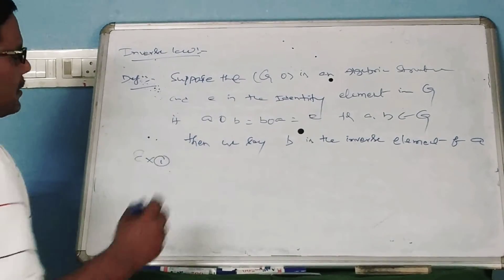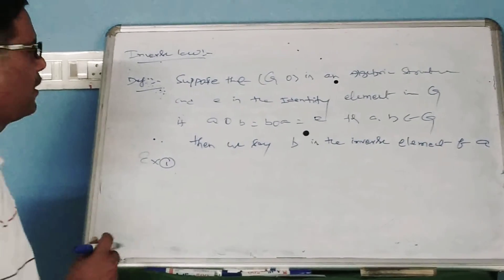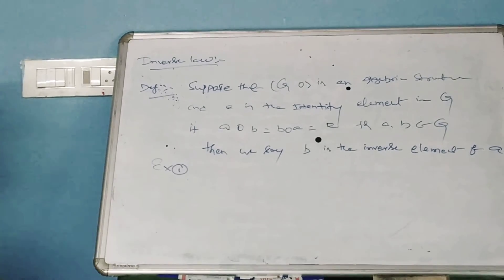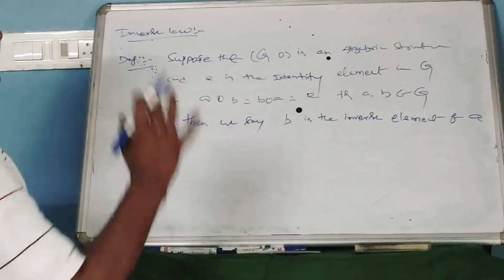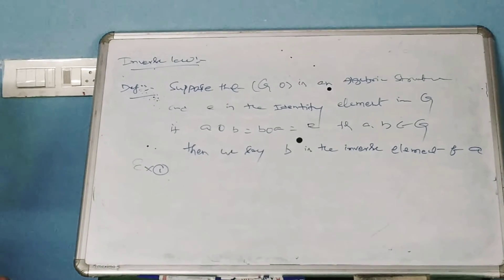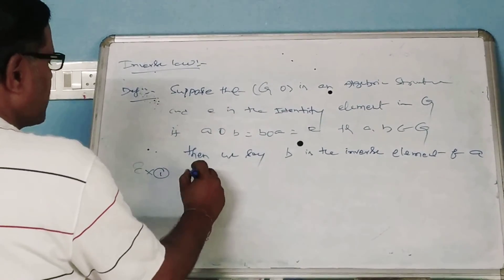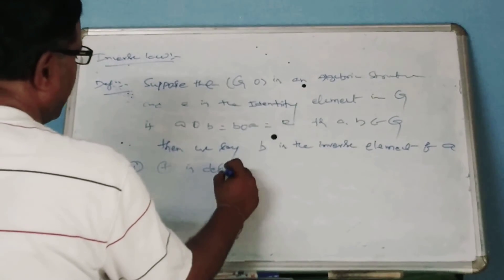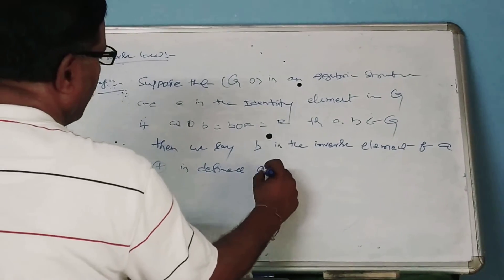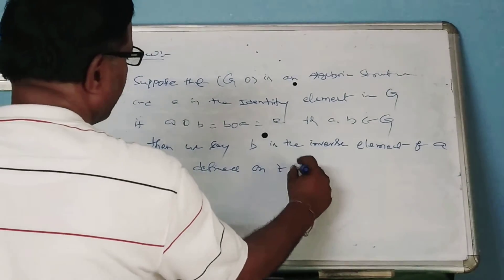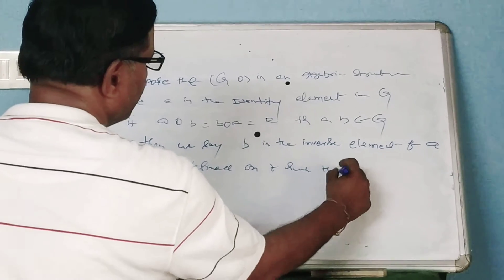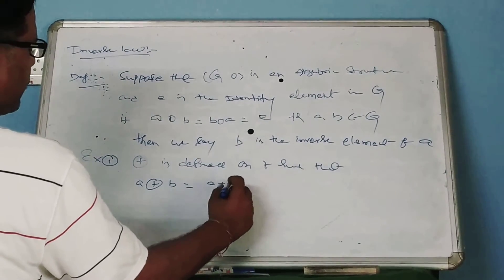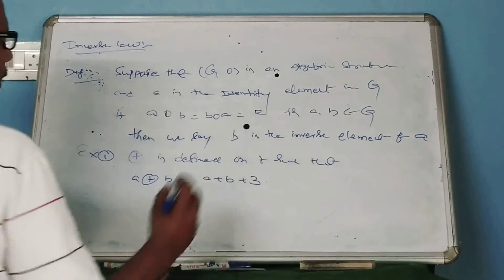Let us find an inverse element. I will give you a brief example on this, which is also called the inverse law. Circular-plus is defined on Z such that A circular-plus B is equal to A plus B plus 3.